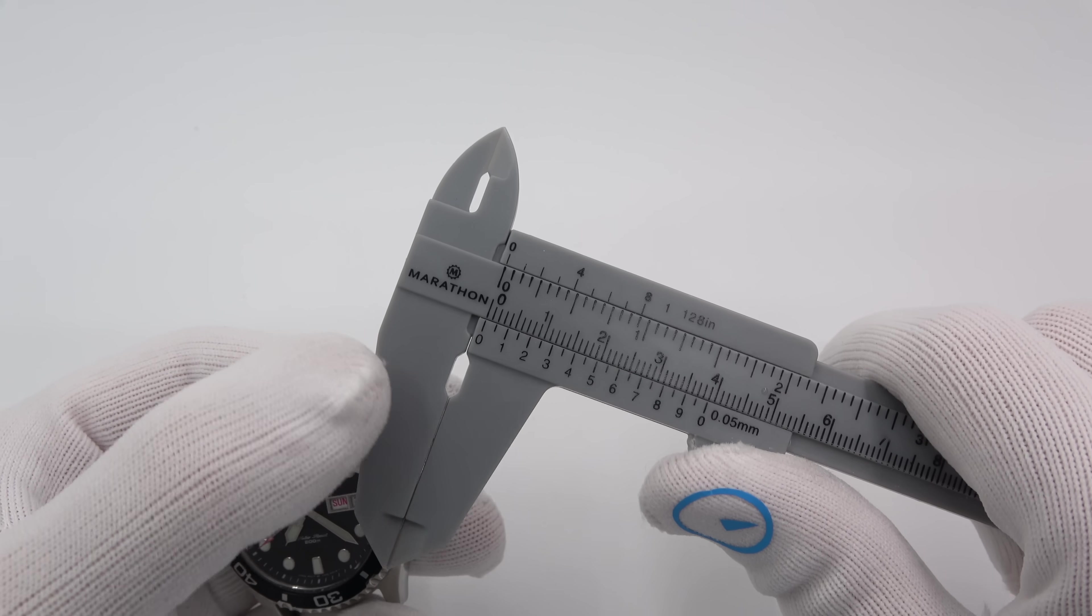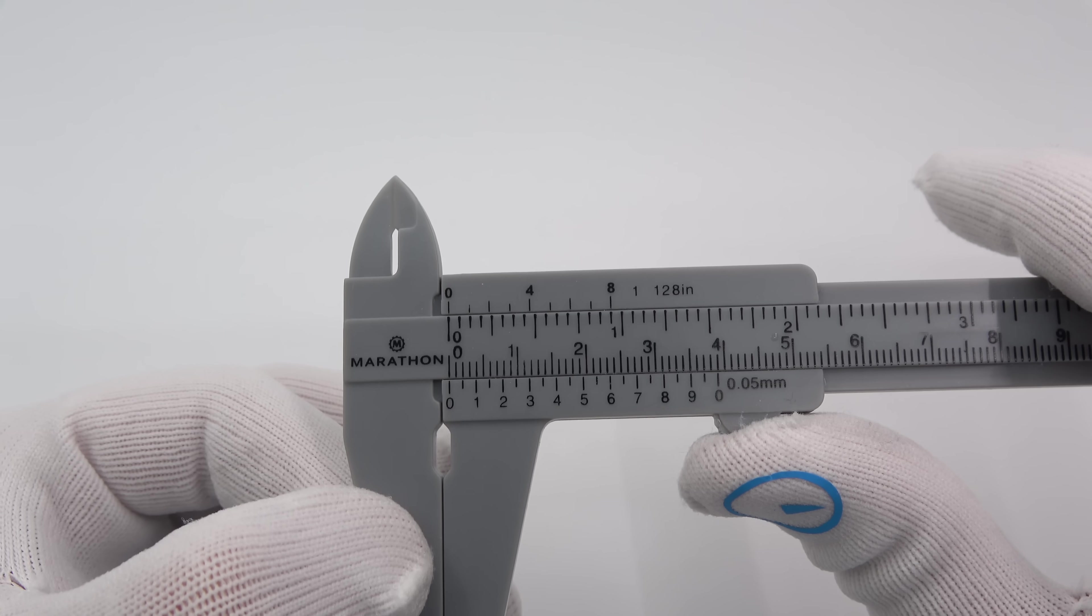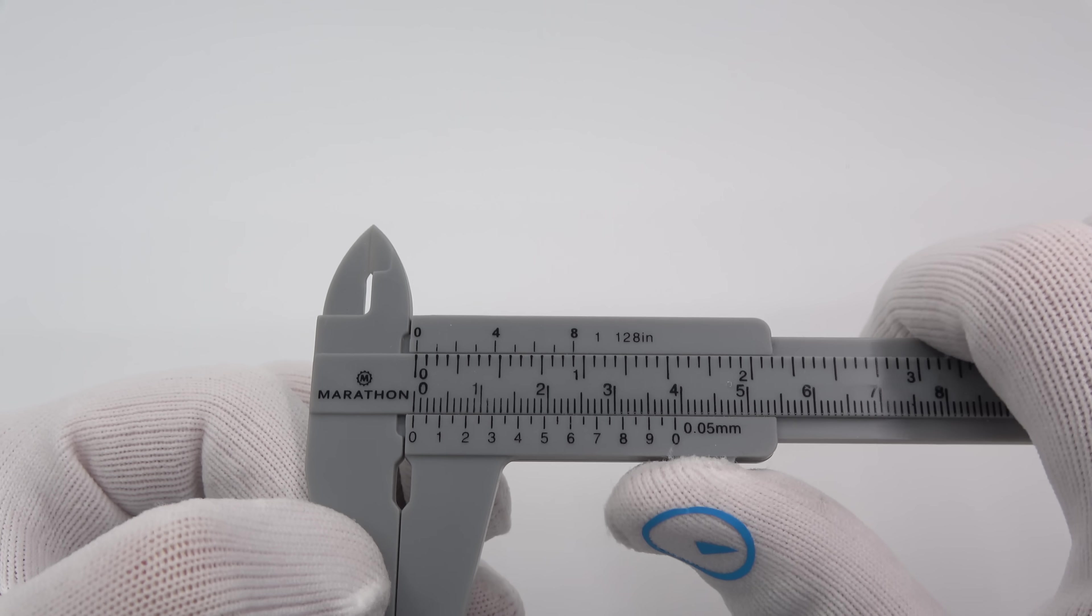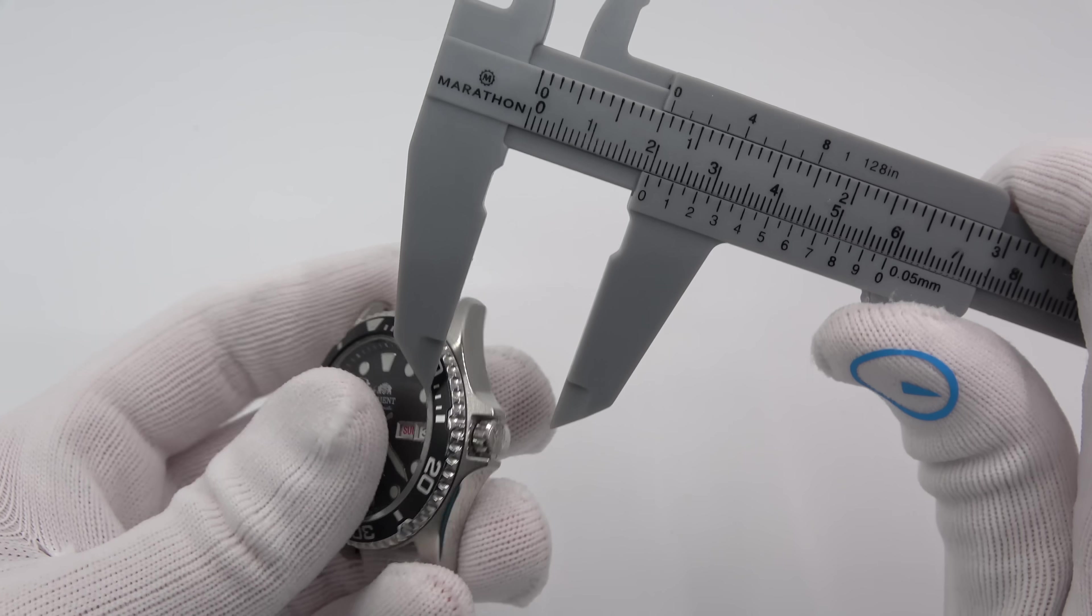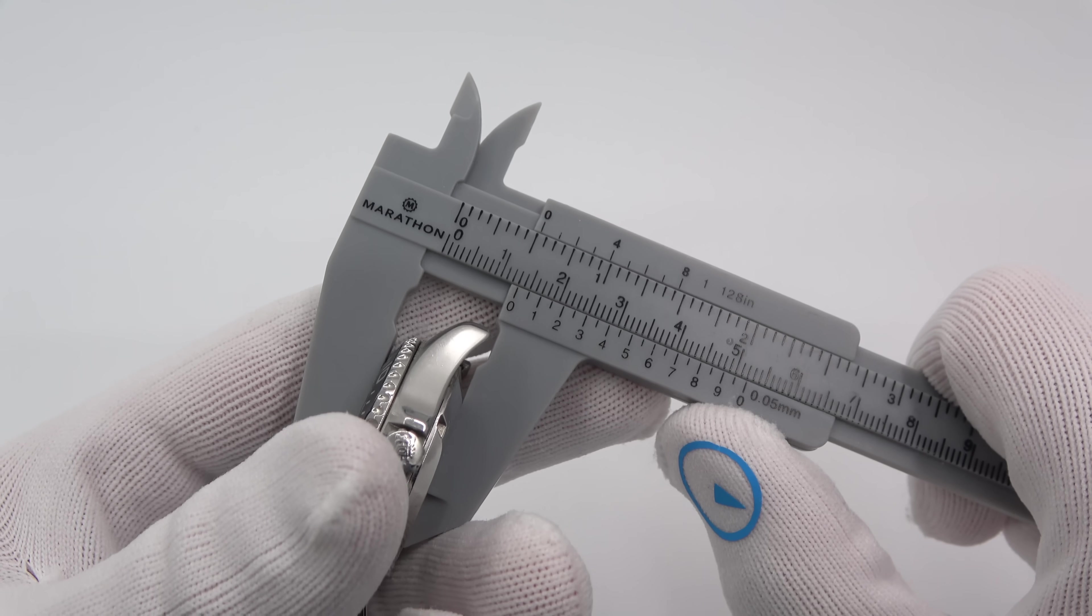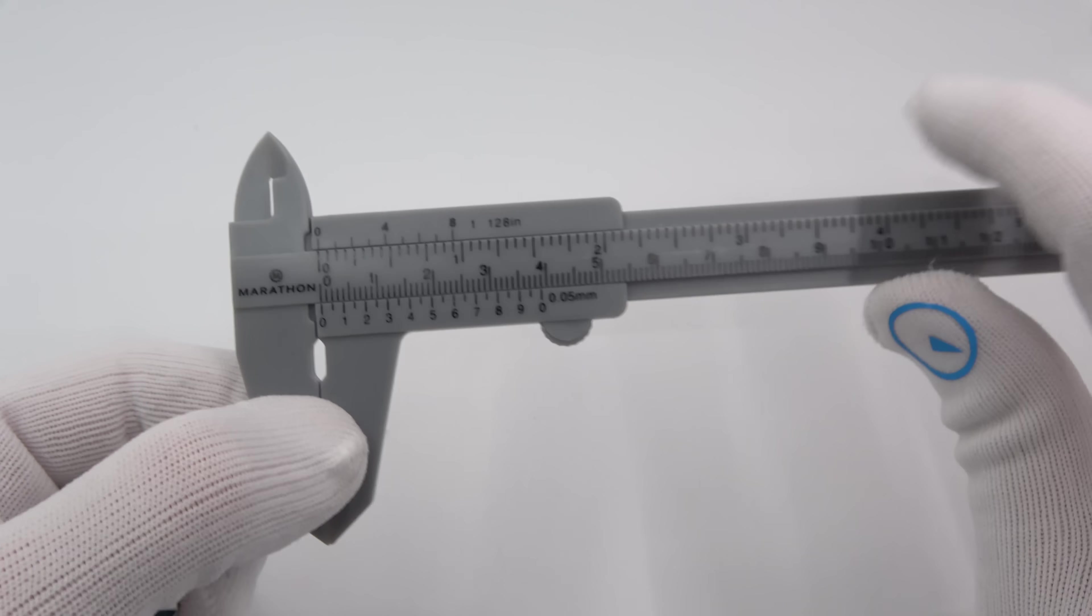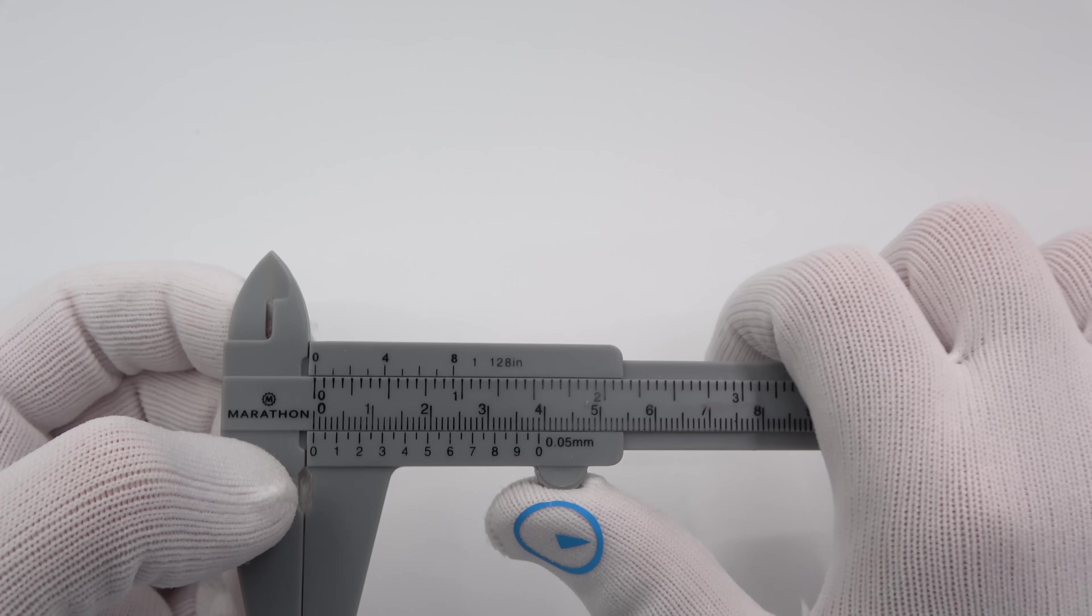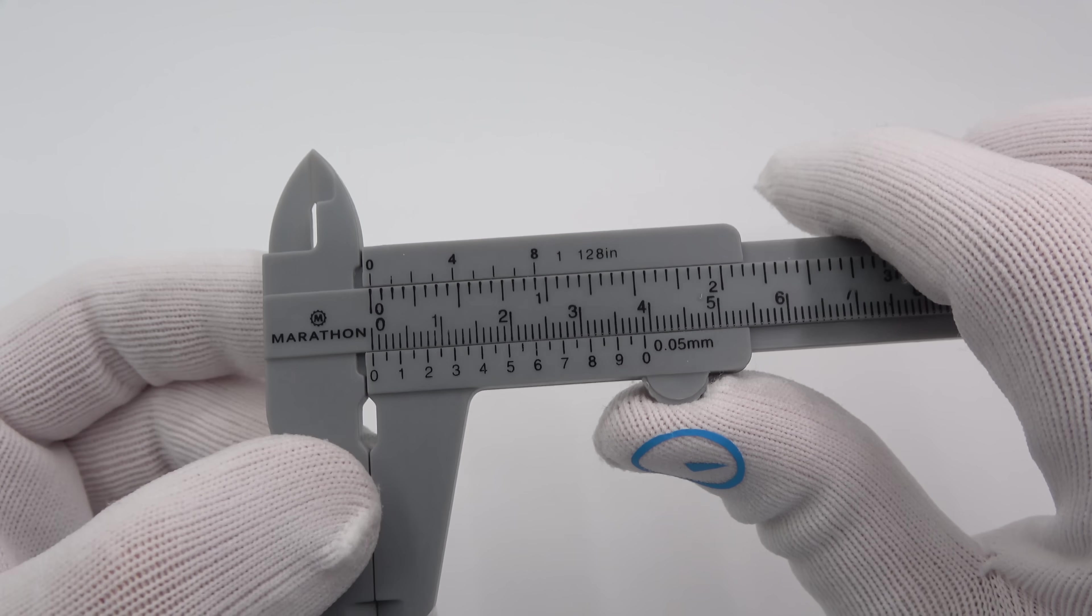Of course the downfall here is that while they can be used for decent precision down to 0.05 millimeters, they are plastic. So if you want to measure something, the harder you push you can kind of change the dimension, whereas with steel calipers you cannot.